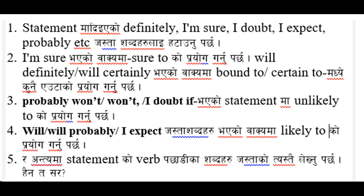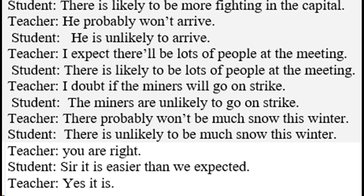Number two: There will probably be more fighting in the capital. The answer is: There is likely to be more fighting in the capital. Number three: He probably won't arrive. Answer: He is unlikely to arrive. Number four: I expect there will be lots of people at the meeting. Answer: There is likely to be lots of people at the meeting. Number five: I doubt if the miners will go on strike. Answer: The miners are unlikely to go on strike.